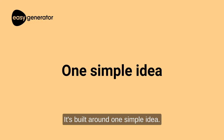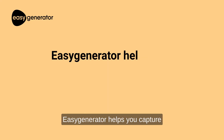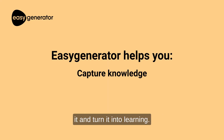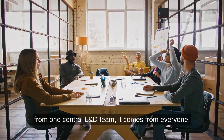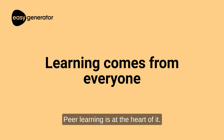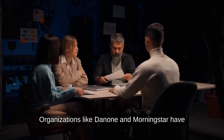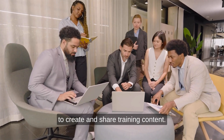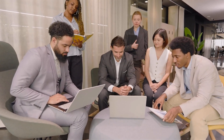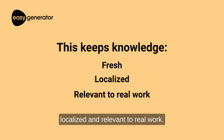It's built around one simple idea: your employees already have the knowledge your company needs, and Easy Generator helps you capture it and turn it into learning. Learning doesn't come from one central L&D team — it comes from everyone. Peer learning is at the heart of it. Organizations like Danone and Morningstar have empowered hundreds, even thousands of employees to create and share training content, keeping knowledge fresh, localized, and relevant to real work.